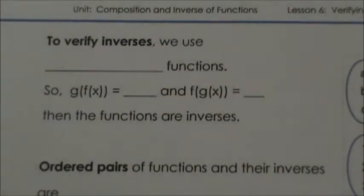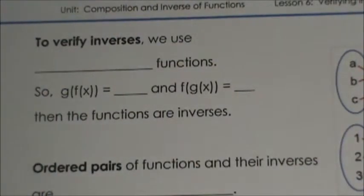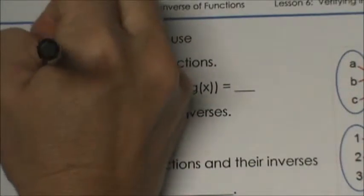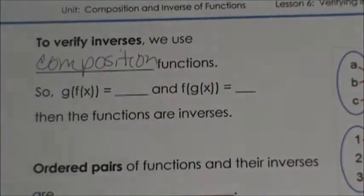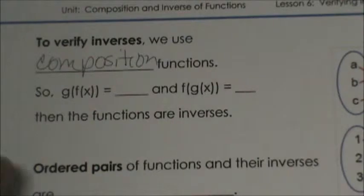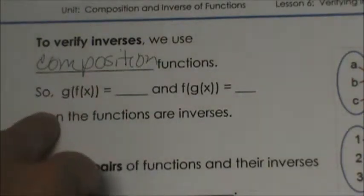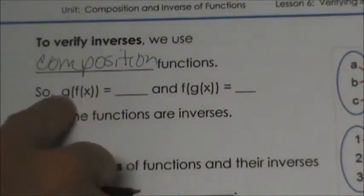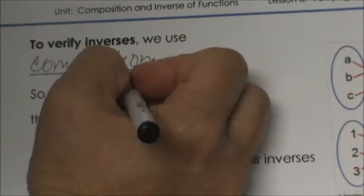To verify inverses, we are going to use composition functions — plugging one function into the other, which we learned earlier in the unit. When we have two functions f(x) and g(x), we are going to plug f(x) into g(x) and simplify it down. If it simplifies to x, then we know that those two functions are inverses of each other.